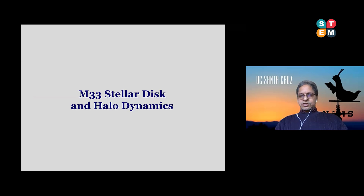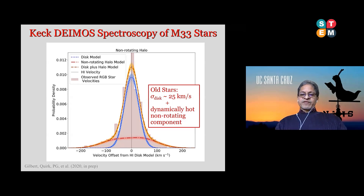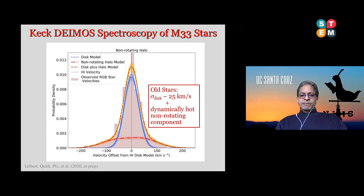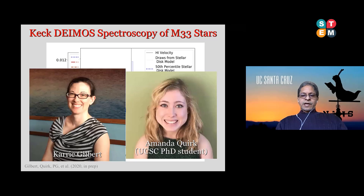In my last few minutes, I'll talk about M33's stellar disk — the Triangulum Galaxy, the largest spiral after Andromeda and the Milky Way in the local group. Carrie Gilbert, a former PhD student at UC Santa Cruz, found that the velocity distribution is well fit by the sum of two components: a narrow component and a broad component. The old stars have a disk with dispersion of 25 km/s and a dynamically hot non-rotating component — the first robust detection of the halo of M33. Young stars show a slightly narrower distribution of 19 km/s. This is the work of Carrie Gilbert and Amanda Quirk.